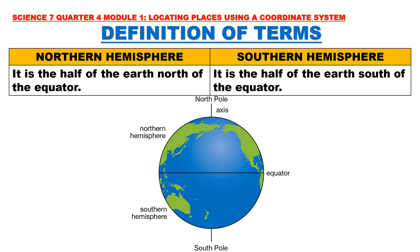Let us proceed with the definition of terms. Northern hemisphere: it is the half of the Earth north of the equator. Southern hemisphere: the half of the Earth south of the equator. All of the places that are found north of the equator are in the northern hemisphere, and all places on Earth found to the south of the equator are in the southern hemisphere.